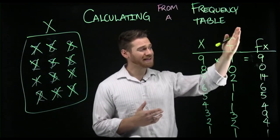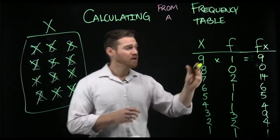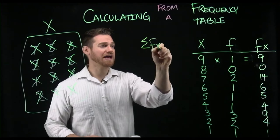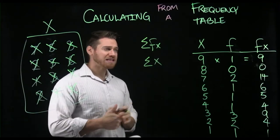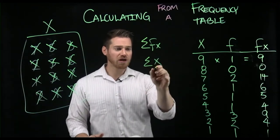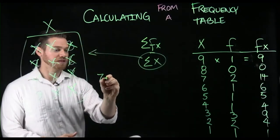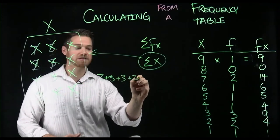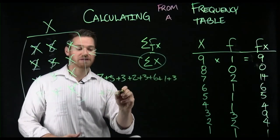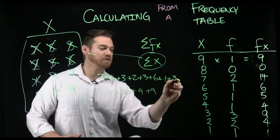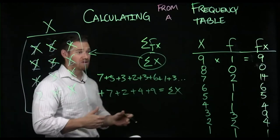Once I've done that, I can simply add together all of these fx scores. And what is that going to give me? Well, if I get the sum of fx, that is the sum of x. And that might seem a little confusing. But if we think about in raw data, the sum of x would mean add together all the x scores. So I would have taken 7 plus 5 plus 3 plus 2 plus 3 plus 6 plus 1 plus 3 plus 7 plus 2 plus 4 plus 9. And that all together is what we would call the sum of x.